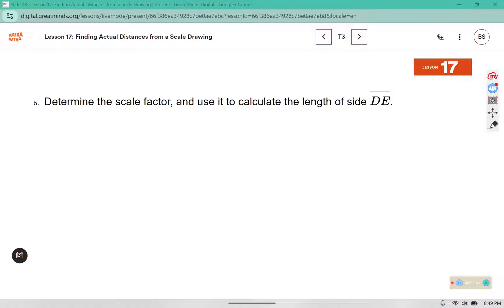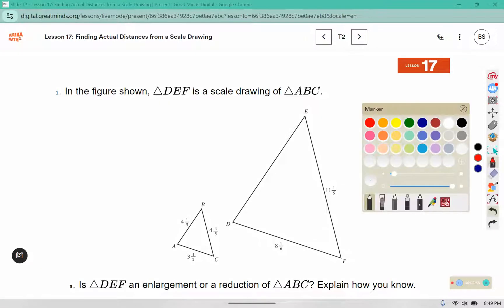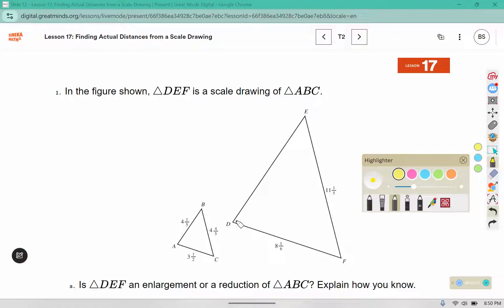Determine the scale factor and use it to calculate the length of side DE. In order to find the scale factor, we need to use two corresponding sides. Here I see DF corresponds with AC. They're located in the same position.